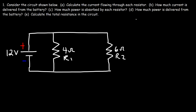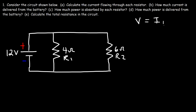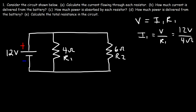We can use Ohm's law: V is equal to IR. The voltage of the battery, which is the voltage across each resistor, equals the current flowing through the resistor times the resistance. To calculate the current, it's going to be the voltage divided by that particular resistor. We have 12 volts across this resistor, and if we divide it by 4 ohms, that gives us a current of 3 amps flowing through that resistor.